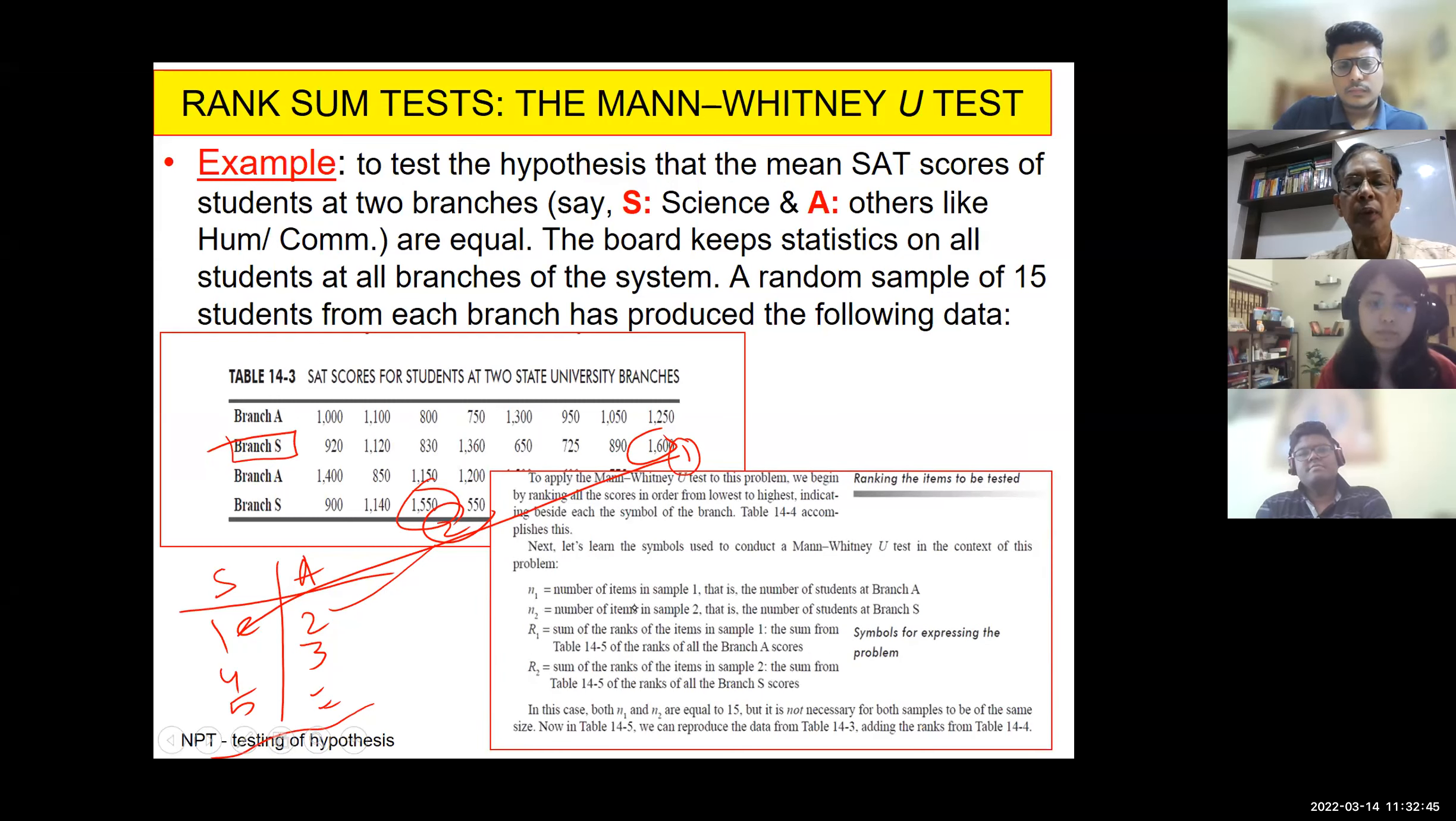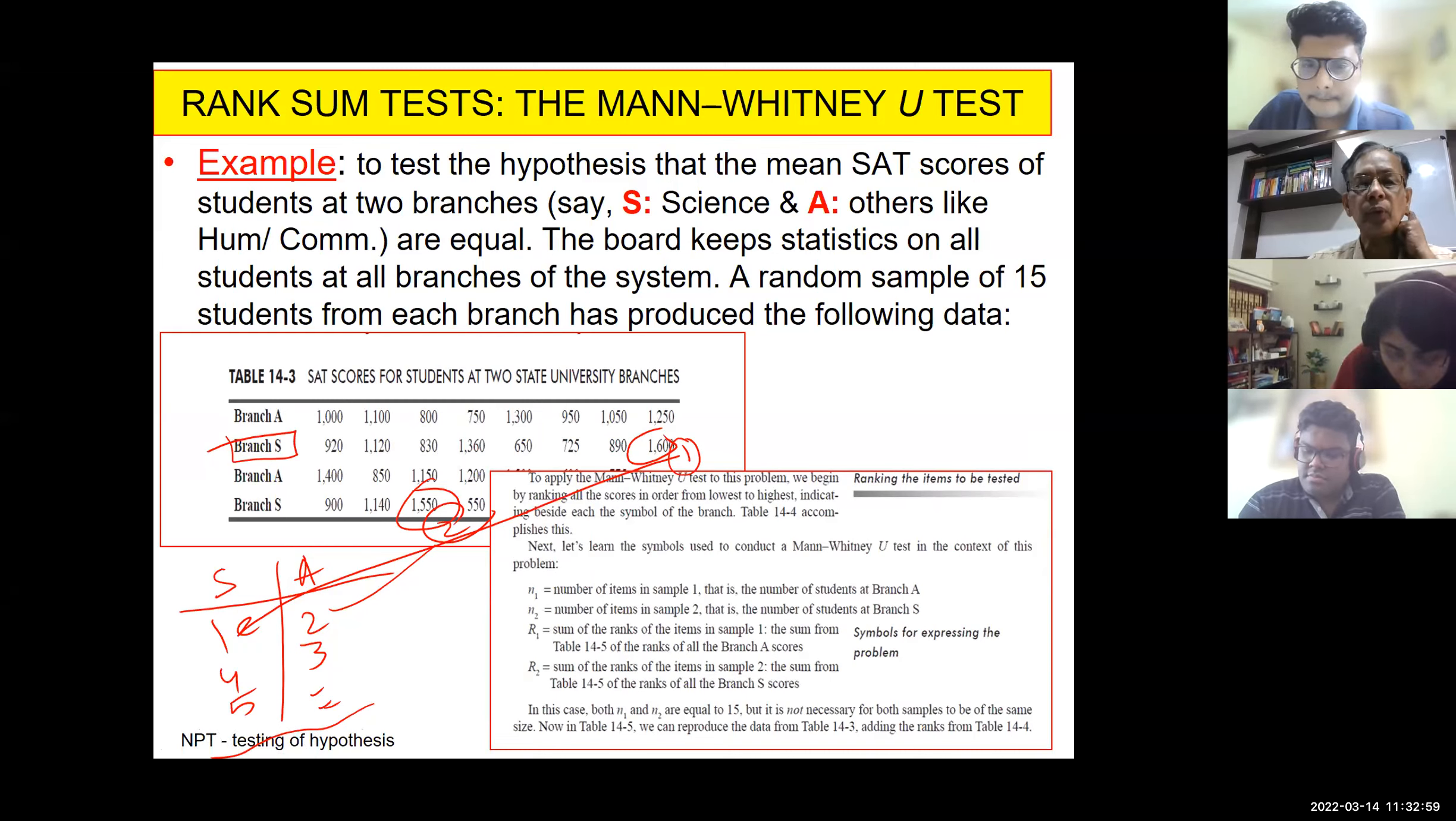Now, all of you quickly can you note down some of the symbols, nomenclature. N1, N2, R1, R2. N1 is sample size of first sample. N2 is sample size of second sample. R1 is the rank sum of first sample. R2 is the rank sum of second sample.